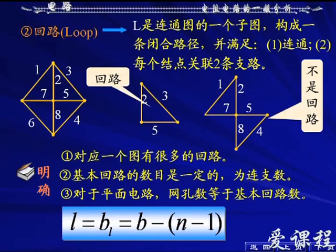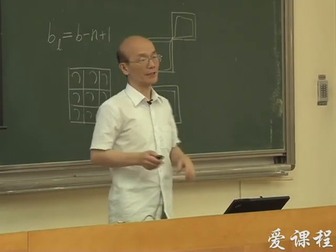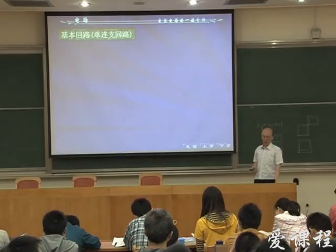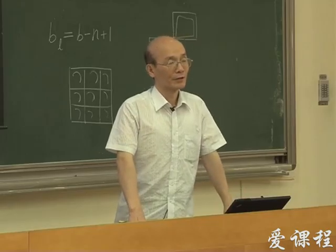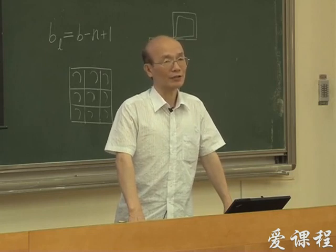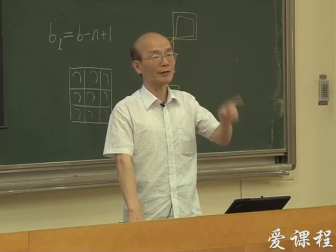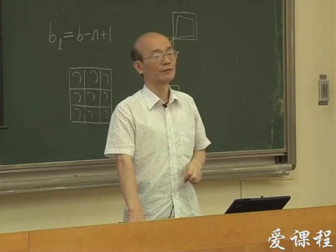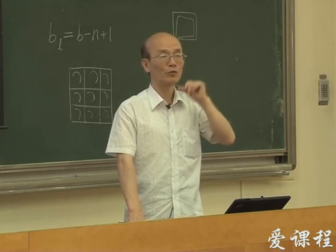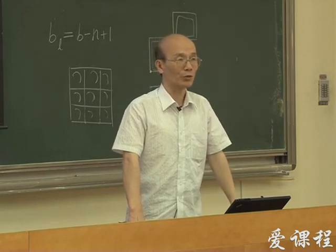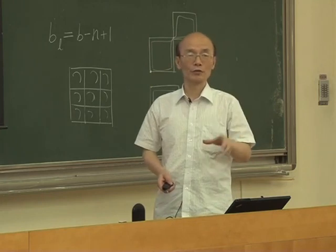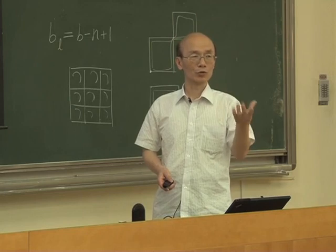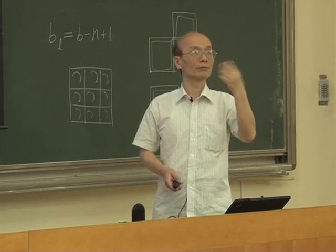基本回路数L = BL = B - N + 1。什么叫基本回路？所谓基本回路就是单连枝回路，也就是说在这个回路里边一定包含了一条连枝，其他的支路全都是树枝。这样的回路称它为基本回路。也就是说对一个图我们可以选定它的树，树枝和连枝就知道了，每一个连枝对应一个基本回路。